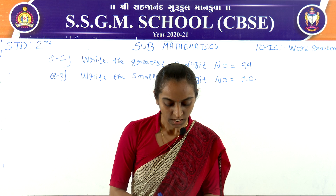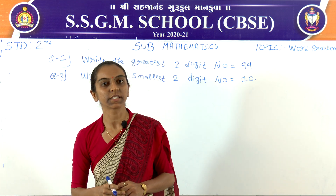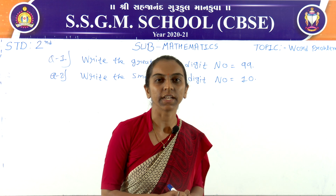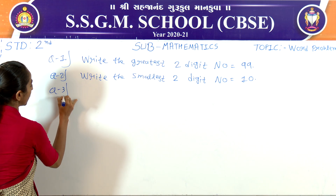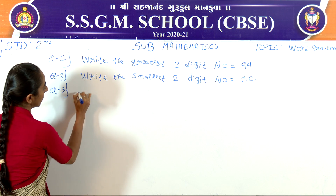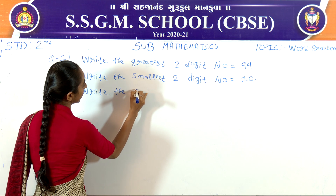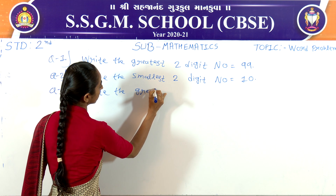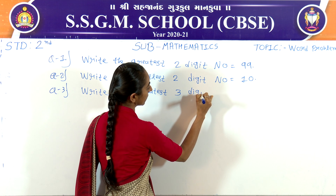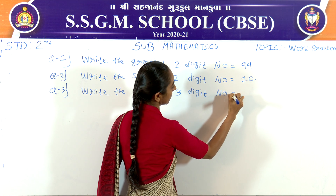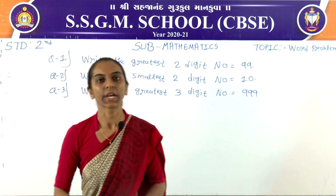Third question is: what is the greatest number of three digits? You know that the three-digit greatest number is 999. Write the greatest three-digit number. The answer is 999.